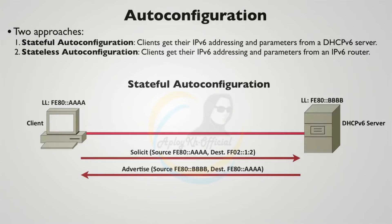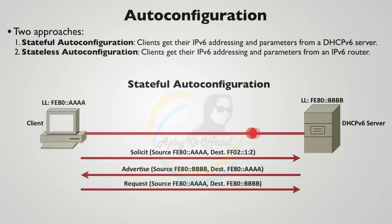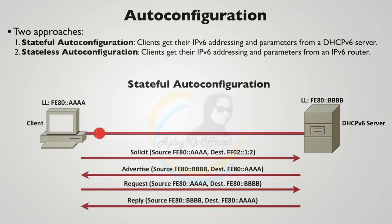Now the client is able to communicate with the server. It sources a request message from the client's link-local address to the server's link-local address, requesting the IP address information. The server responds using link-local addresses with a reply message containing the IPv6 addressing information. That was the stateful auto configuration approach.